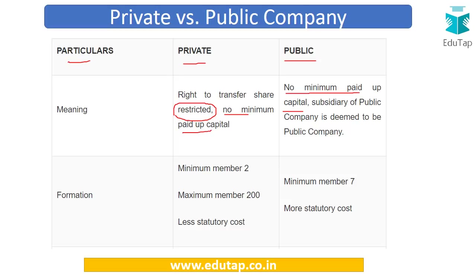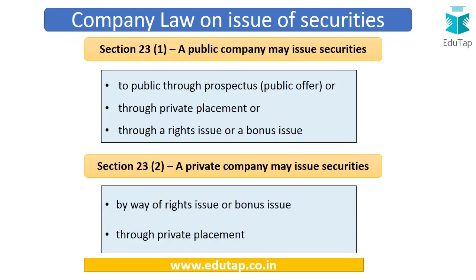Regarding the number of members, in a private company the minimum is 2 and the maximum is 200. For a public company the minimum is 7 and there is no maximum limit. Private companies have fewer regulatory compliances because the interest of the public is generally not at stake, resulting in less statutory cost. Public companies, because they involve the interest of the general public at large, face a higher statutory cost. Section 23 of the Companies Act 2013 deals with the issue of securities.